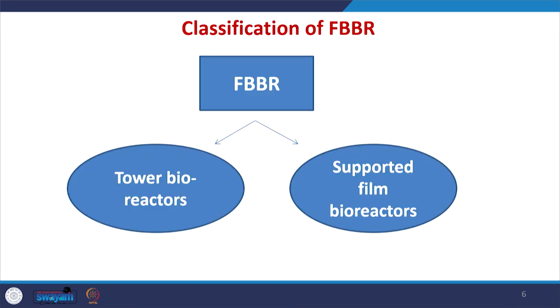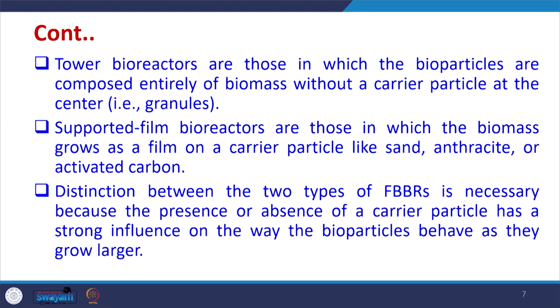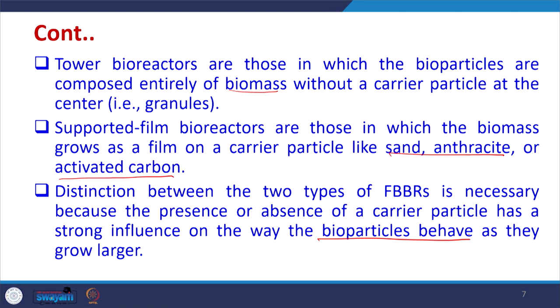FBBRs can be classified into two categories: tower bioreactors and supported film bioreactors. Tower bioreactors are those in which the bioparticles are composed entirely of biomass without a carrier particle at the center. Supported film bioreactors are those in which the biofilm grows as a film on a carrier particle such as sand, anthracite, or activated carbon. The distinction is necessary because the presence or absence of a carrier particle strongly influences bioparticle behavior as they grow larger and also affects the upflow velocities that must be maintained.